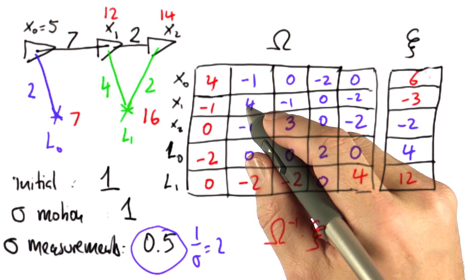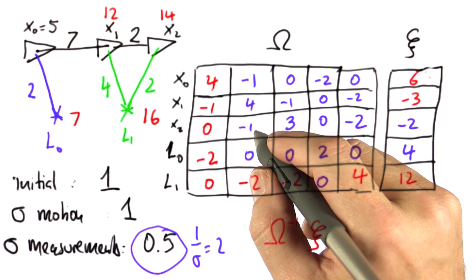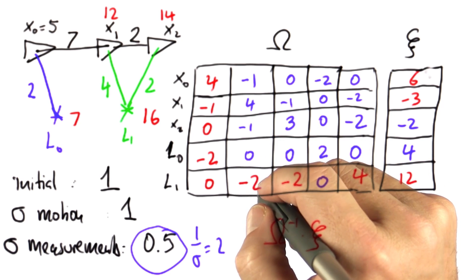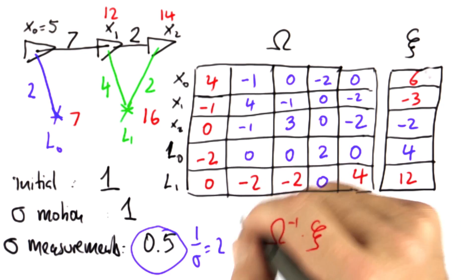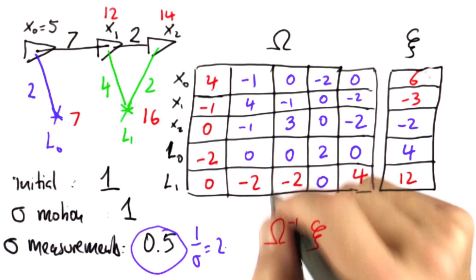Let's pick this off-diagonal element over here. This was only affected when moving from x1 to x2, and it was a minus one. This element over here was affected when we sensed l1 from x1. And again, the off-diagonal element is negative, so we added a minus two over here.